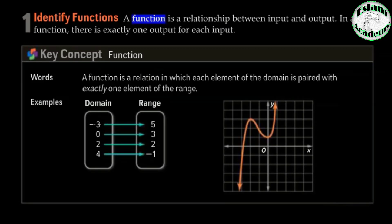For example, we have here negative 3 connected with 5, 0 with 3, 2 and 2, 4 and negative 1. Each element of the domain is connected only one time with an element of the range. So the most important thing we need to look at is the domain — that all elements of the domain are connected with an element of range.